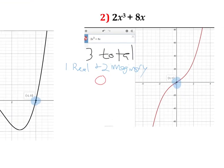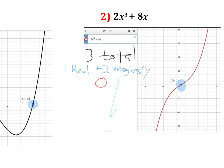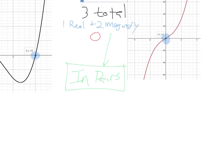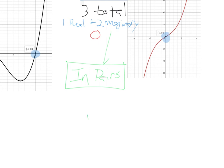One thing to note about imaginary solutions before I end this: they always, always, always come in pairs. So you will never have an odd number of imaginary solutions. You can have two of them, four of them, six of them, eight. And if you think about it, that kind of makes sense because imaginary solutions come from taking the square root of a negative number. Anytime we take the square root of something, there's a plus or minus that comes into play. That's why they always show up in sets of two.